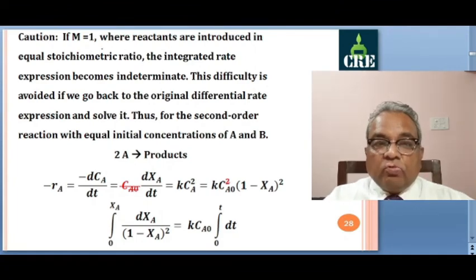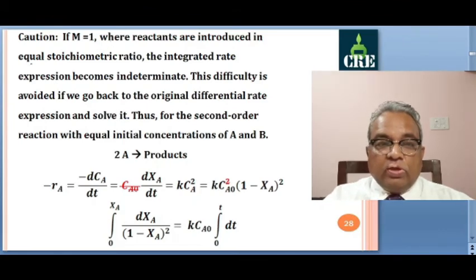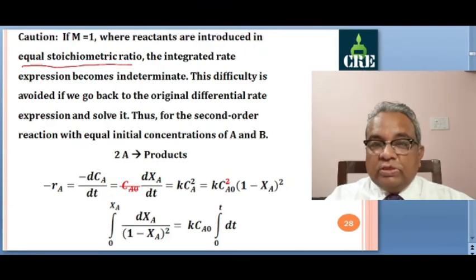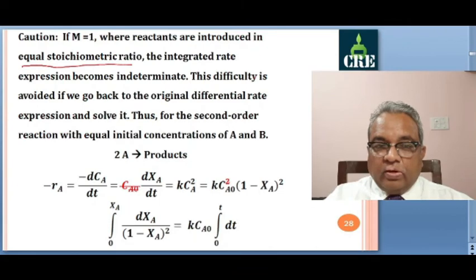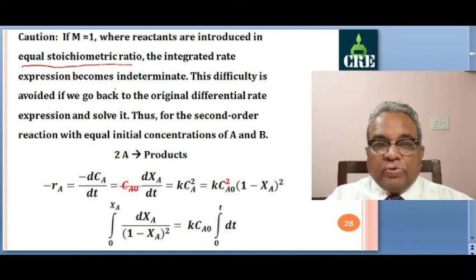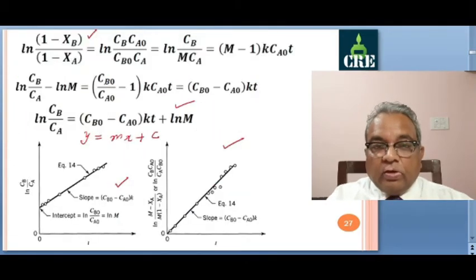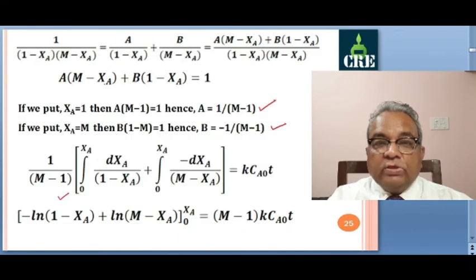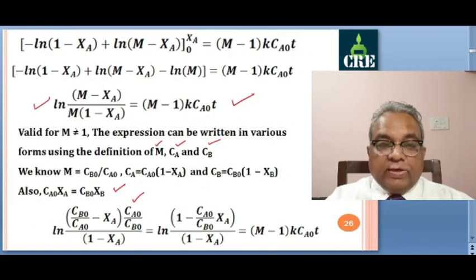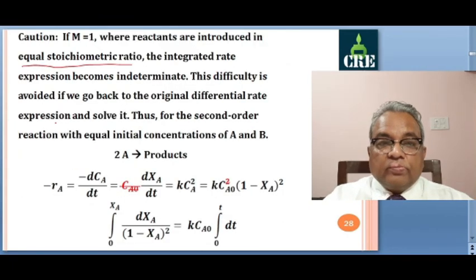Now, if M equals 1, that is CA0 equals CB0, the reactants are introduced in equal stoichiometric ratio. In this case the integrated rate equation becomes indeterminate, as the right hand side becomes 0, which is meaningless. This special case is valid for all values of M except M equals 1.